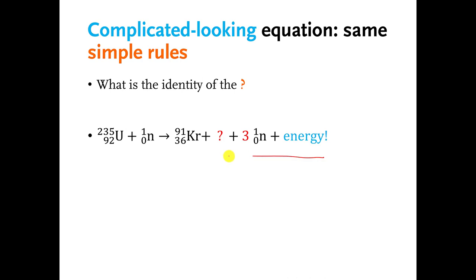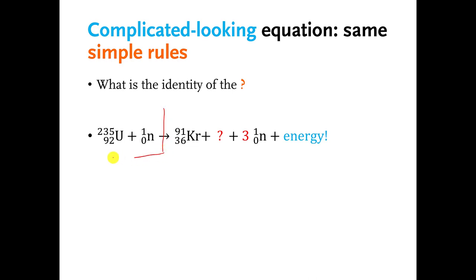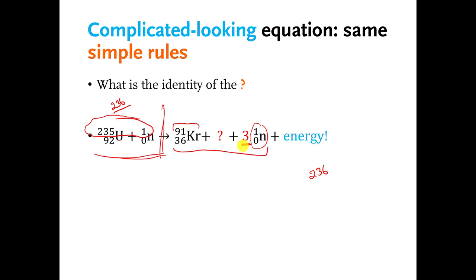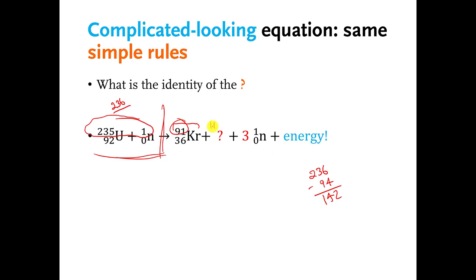Here is a different kind of equation — a somewhat famous equation that looks a lot more complicated, with one question mark. We're going to split the equation down the arrow. This time we have more than one thing on the left side, so we add up the weight: everything on the left adds up to 236. On the right side, one thing weighs 91, and we have 3 neutrons each weighing 1, so that's a total of 3. So 91 plus 3 is 94, meaning the question mark has a weight of 236 minus 94, which equals 142.